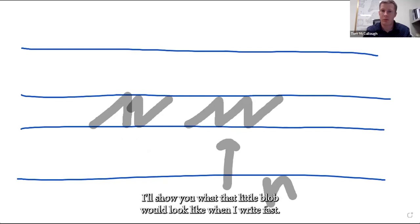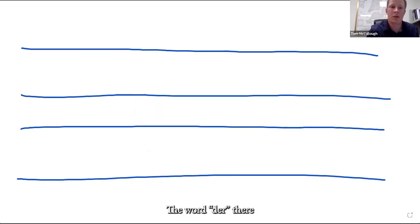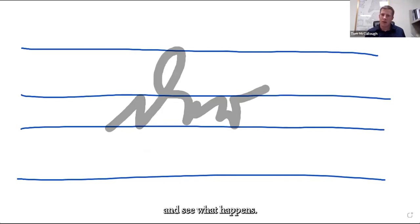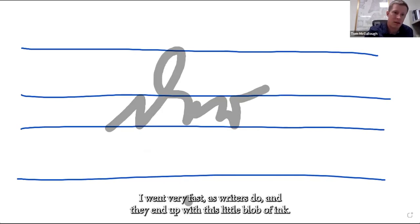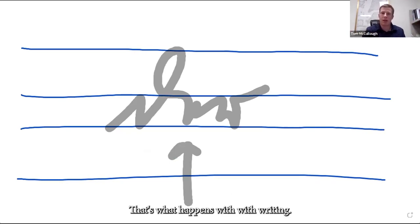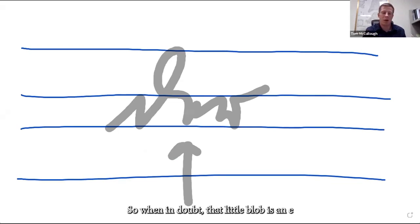I'll show what that little blob looks like when writing fast — writing the word 'der' very quickly. You can see what happens: writers end up with a little blob of ink. It's no longer the perfect E we just learned, but it becomes this little blob. So when in doubt, that little blob is an E.